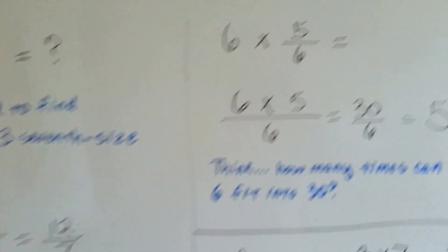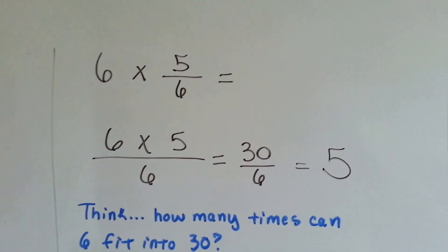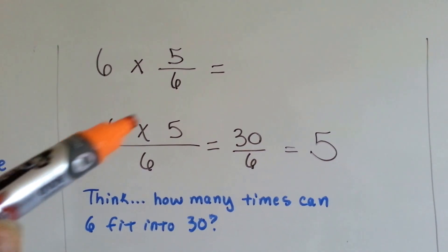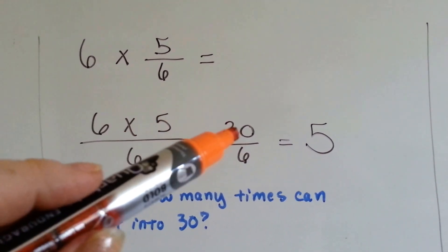See, wasn't that easy? If we have 6 times 5 sixths, we end up with 6 times 5 over 6, which is 30 over 6.